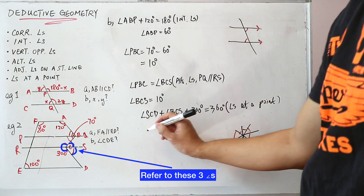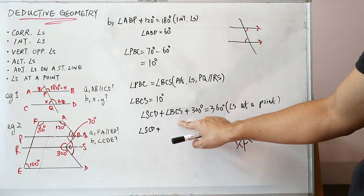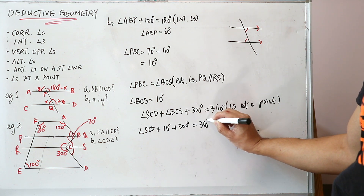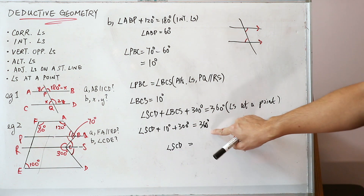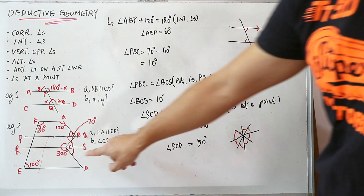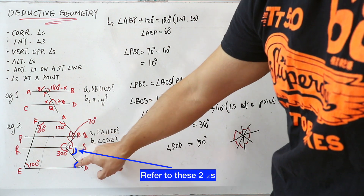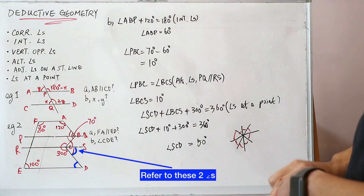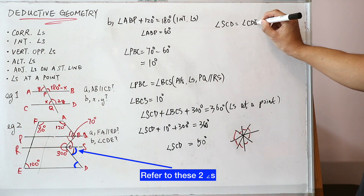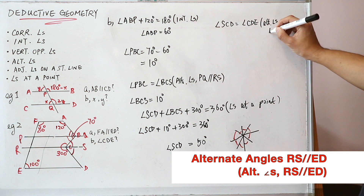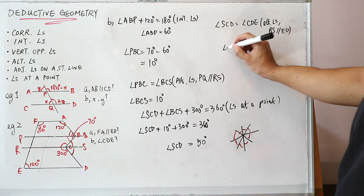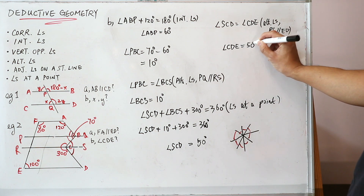Plugging in the numbers: angle SCD plus 10 degrees plus 300 degrees equals 360 degrees, so angle SCD equals 360 minus 10 minus 300 equals 50 degrees. Then angle SCD equals angle CDE because they are alternate angles, RS parallel to ED. So angle CDE equals 50 degrees.